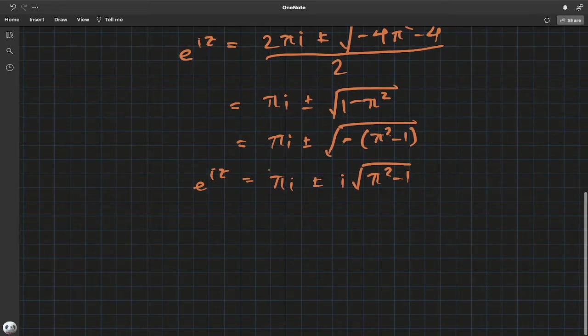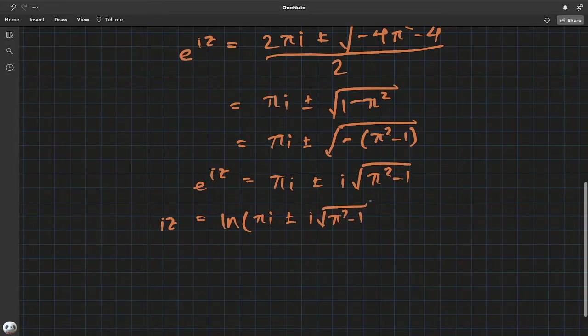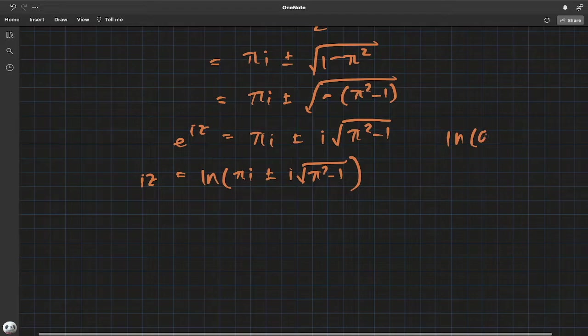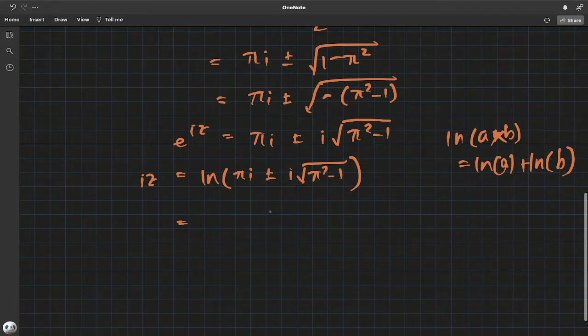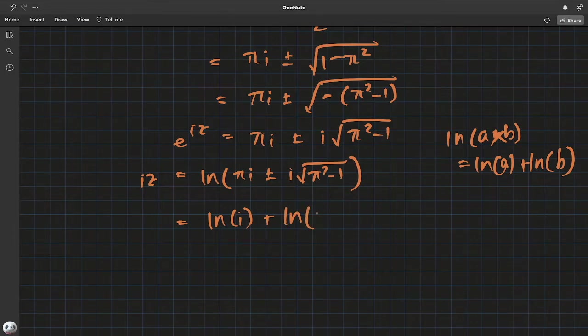Now what I'm going to do is take natural log on both sides. This brings the power down. Natural log of e is 1, we have iz equals natural log of πi plus or minus i times square root of π² - 1. We can use this nice property of natural log: natural log of a times b equals natural log of a plus natural log of b.